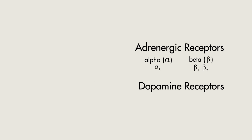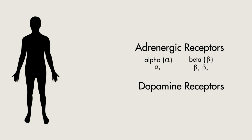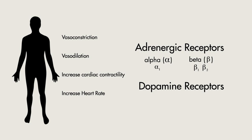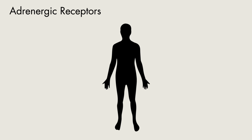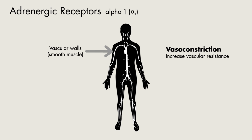What's unique about these receptors is where they are located in your body and how they lead to different physiologic effects. Looking at this in more detail, the alpha-1 receptors are predominantly found in vascular walls. When these receptors are stimulated, they cause vasoconstriction and, as a result, increase your mean arterial pressures.